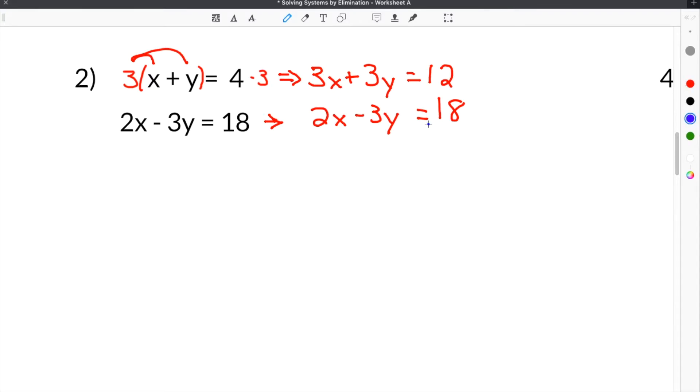Then what we're going to do is we're going to add vertically. So we will add both equations together because we know that the y's are going to cancel. So 3x plus 2x is 5x, and then 3y plus negative 3y would be 0y, or the y's would just cancel, and then 12 plus 18 is 30. So now the 0y is gone, so we'll just cancel it like that. We've got 5x equals 30 now.